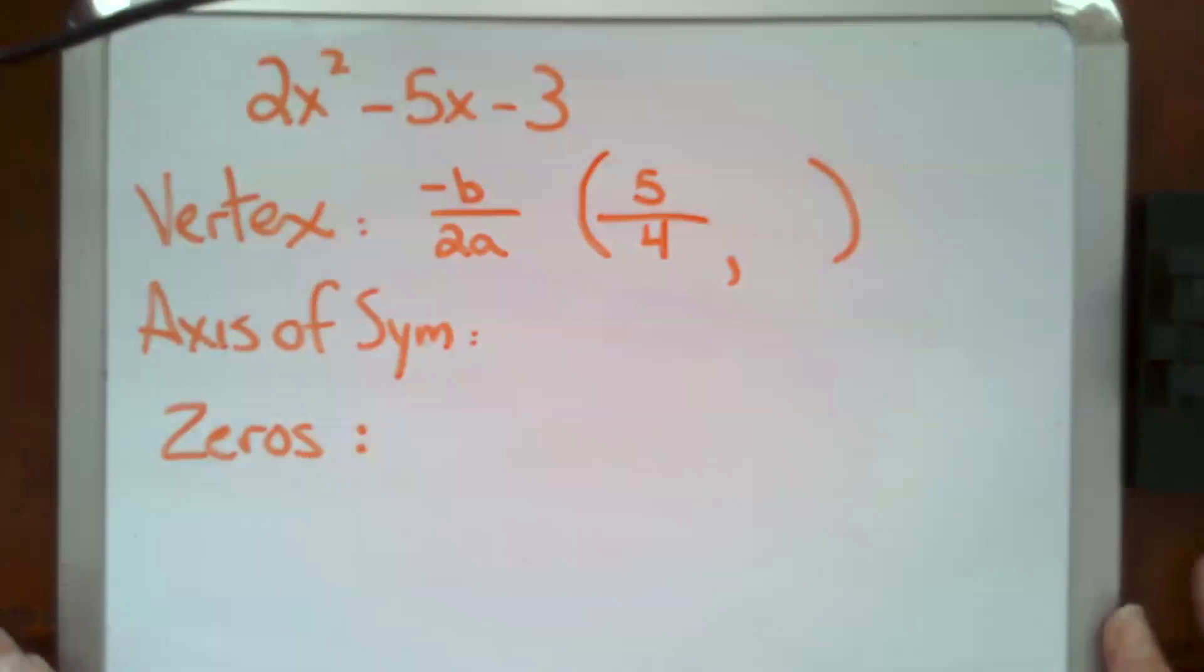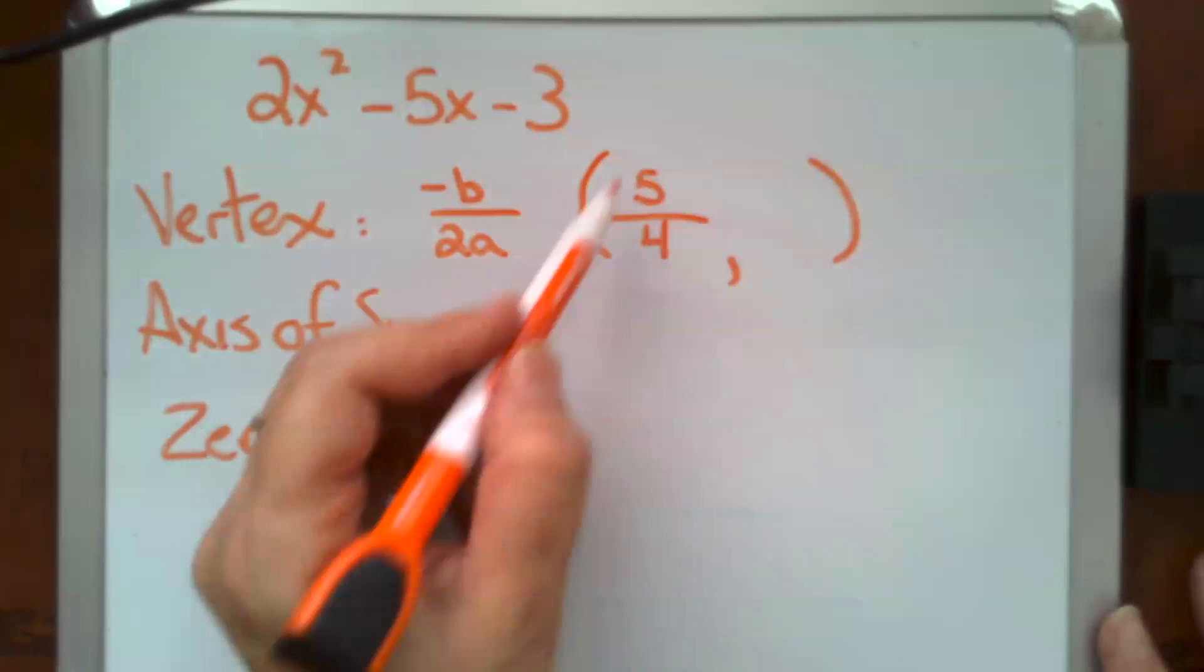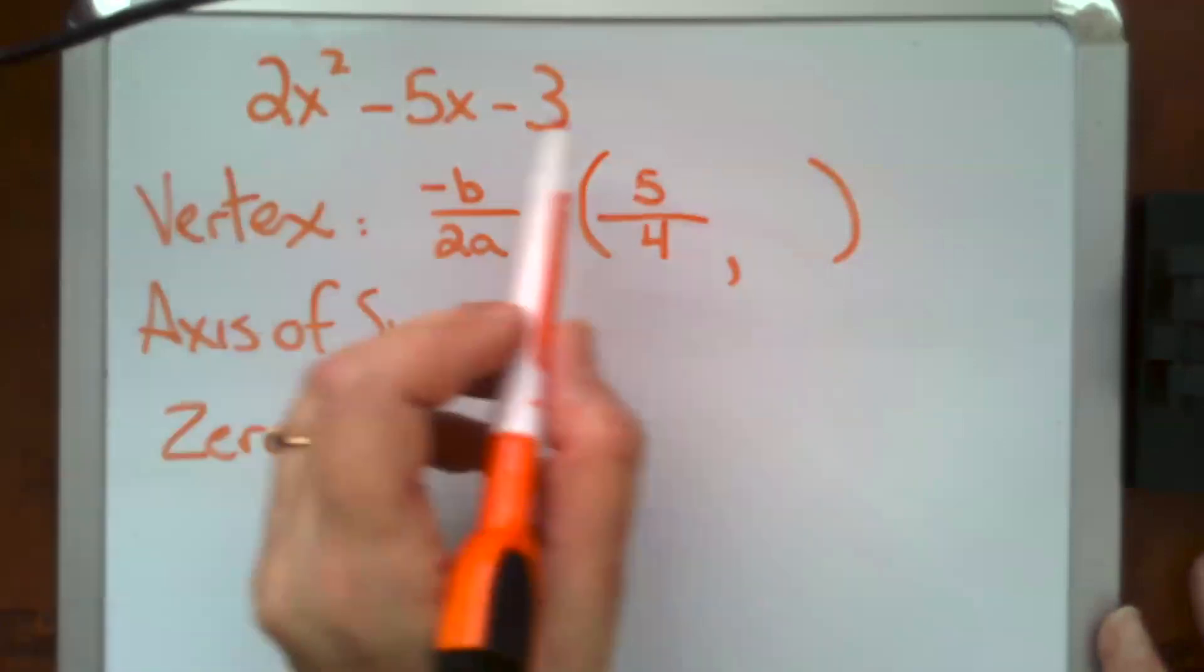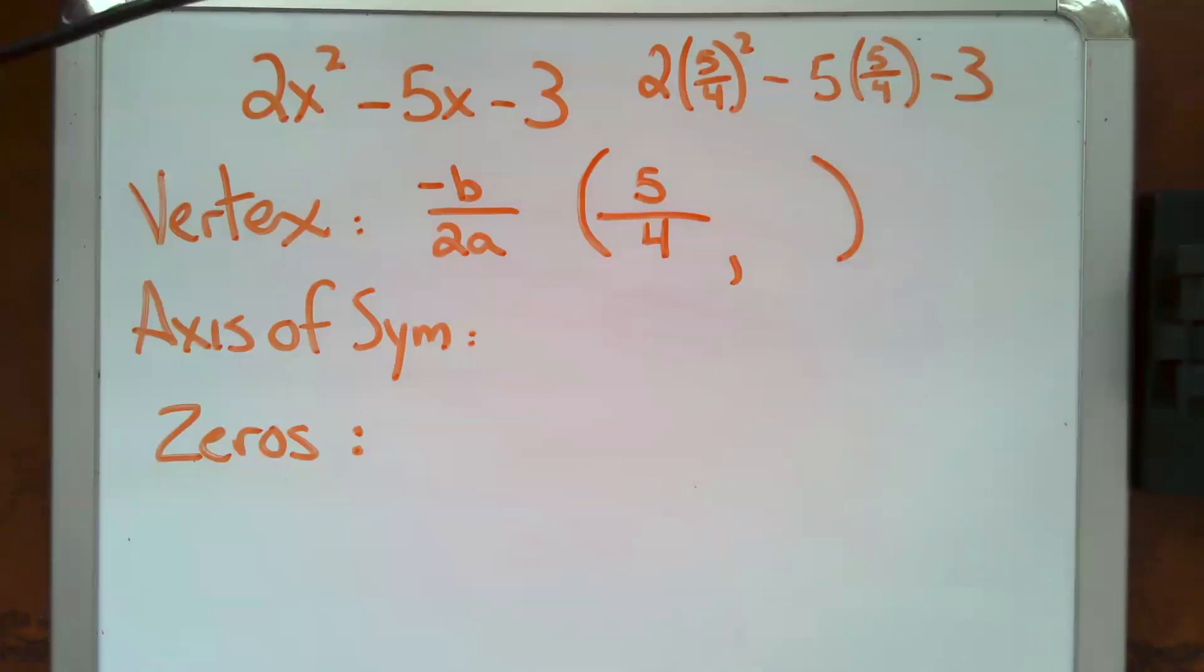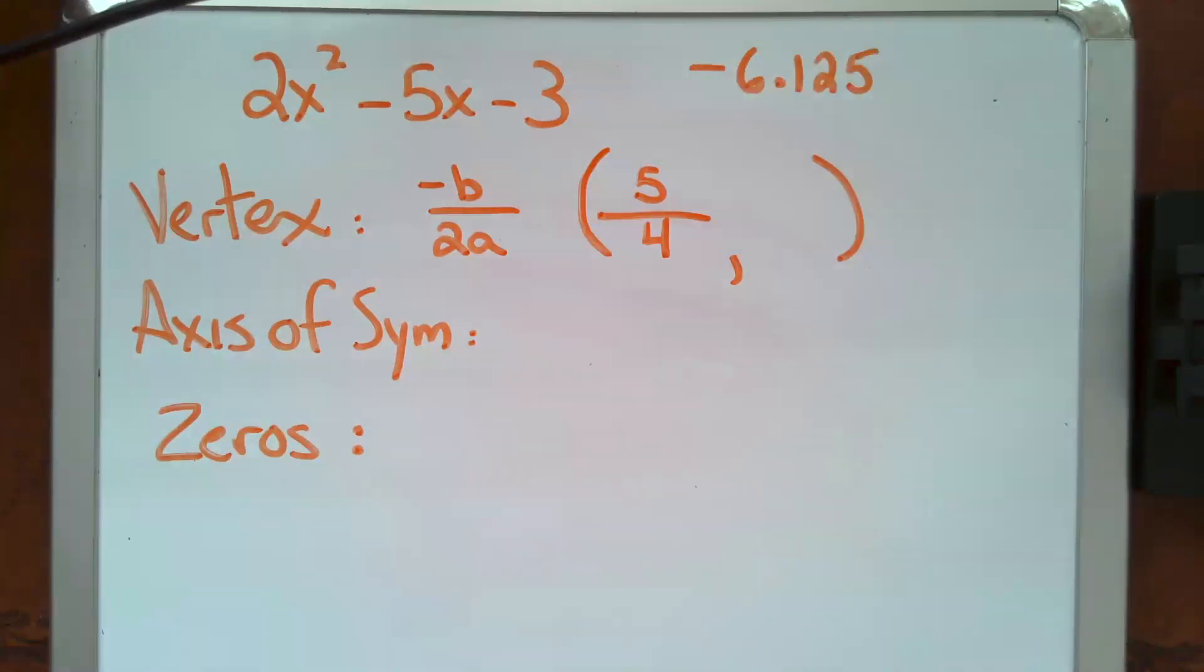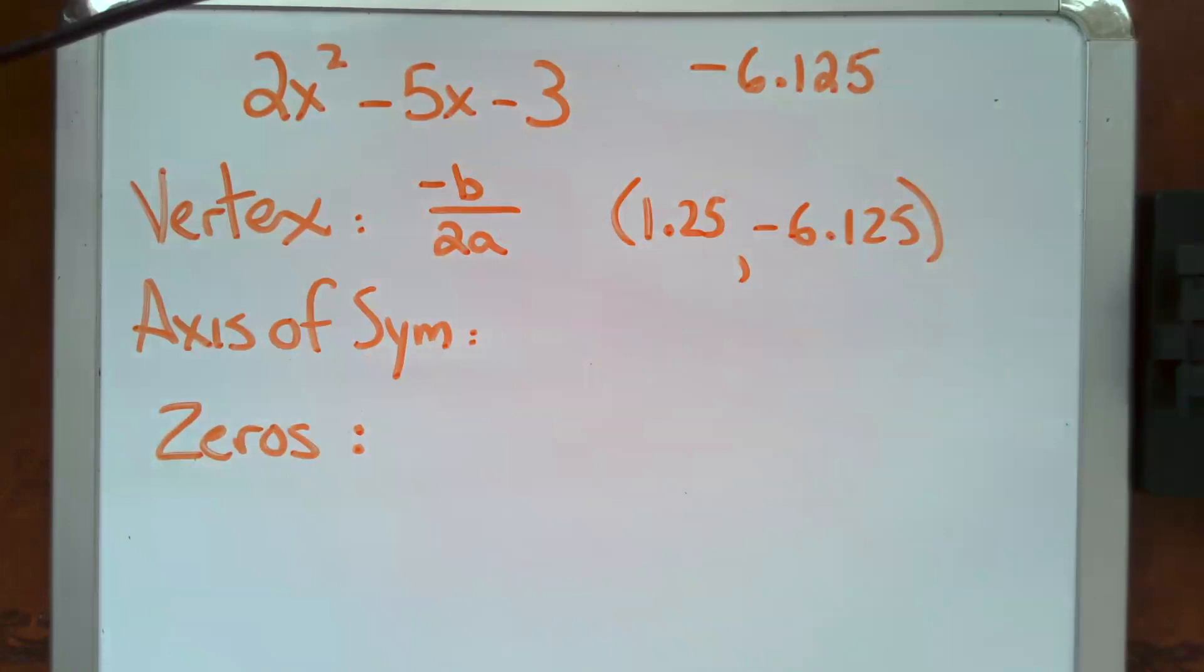Now to find the y-coordinate of our vertex, we go ahead and we plug our x-coordinate into the equation and we solve. So there's us plugging our 5 fourths in and then we use our calculator or we do it out manually and find out that that turns into that, which then further resolves into that, or if we wanted to put our whole thing in terms of decimals, our vertex is found at 1.25, negative 6.125.